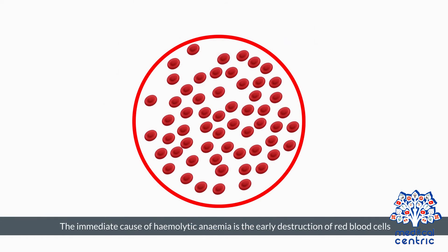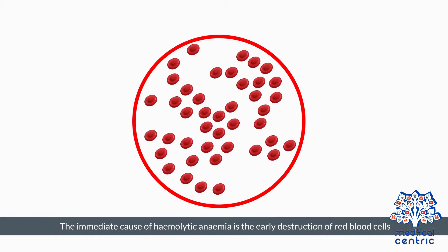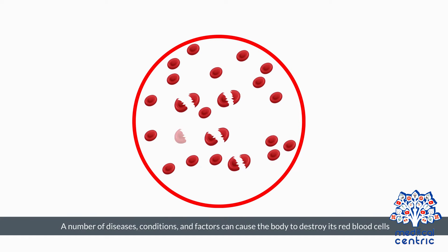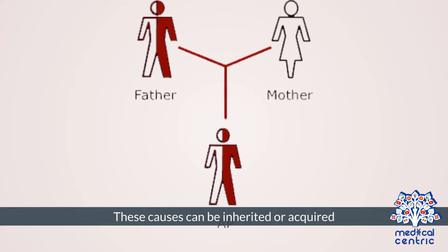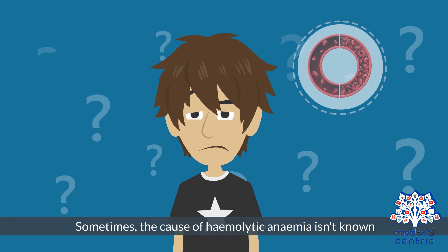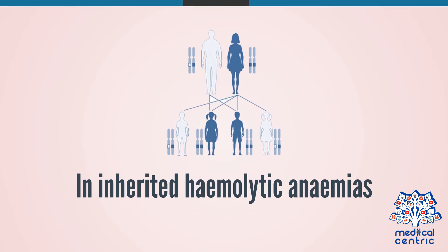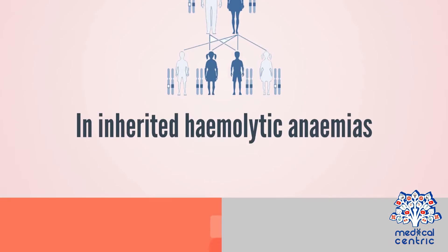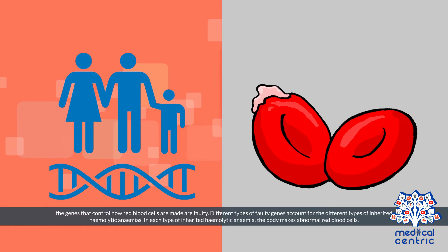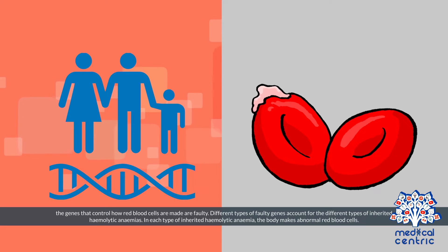The immediate cause of hemolytic anemia is the early destruction of red blood cells. A number of diseases, conditions, and factors can cause the body to destroy its red blood cells. These causes can be inherited or acquired. Sometimes the cause of hemolytic anemia isn't known. In inherited hemolytic anemias, the genes that control how red blood cells are made are faulty, and different types of faulty genes account for the different types of inherited hemolytic anemias.